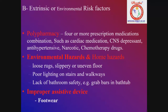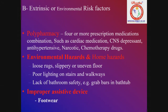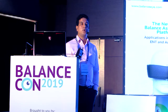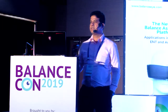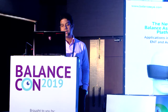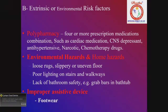The second category is environmental or extrinsic risk factors. These include polypharmacy — the person is using many medications from different specialists such as endocrinologists, gastroenterologists, or neurologists. Using poor prescriptions and medication combinations such as cardiac medications, central nervous system depressants, anti-hypertensives, narcotic and chemotherapy drugs. Environmental hazards include loose rocks, slippery or uneven floors, poor lighting on stairs or walkways, lack of bathroom safety such as grab bars, and improper assistive devices like poor footwear. Diabetic neuropathy patients especially need appropriate footwear to reduce fall risk.